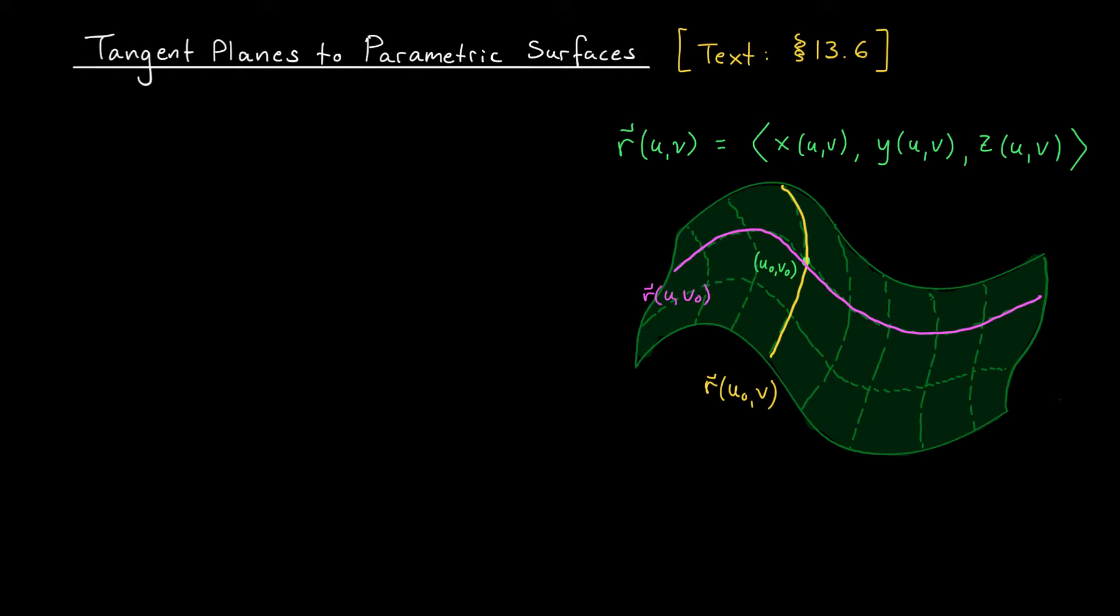Let's say that we want to find the equation of the tangent plane to our surface at this point right here, u0 v0. Maybe the tangent plane looks something like this. We could find that equation if we knew a normal vector to the curve at that point, but how do we find that normal vector?